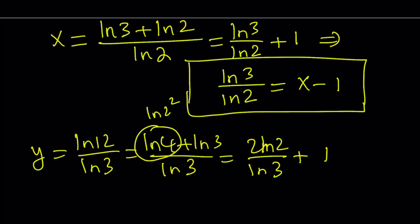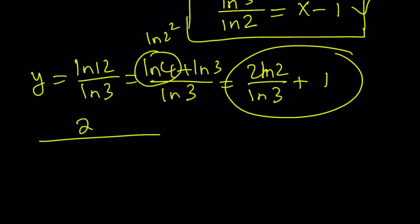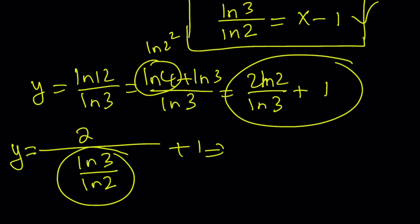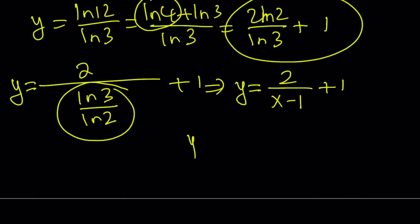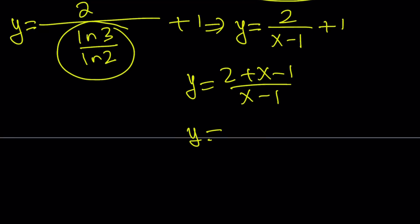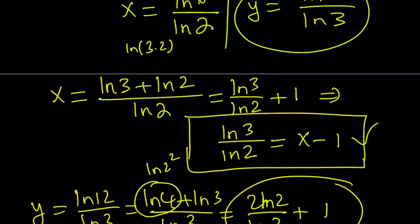Now, we have an expression for ln(3)/ln(2) here. How can I use that here? Well, I can go ahead and flip ln(2)/ln(3) and write it as 2/(ln(3)/ln(2)) + 1. And remember, this is y. And now we know that ln(3)/ln(2) can be written as x - 1. So we can replace it with x - 1. So y = 2/(x-1) + 1. And if you make a common denominator, you get (2 + x - 1)/(x - 1). And finally, y becomes (x+1)/(x-1). So this allows us to express y in terms of x. And this brings us to the end of the second method.